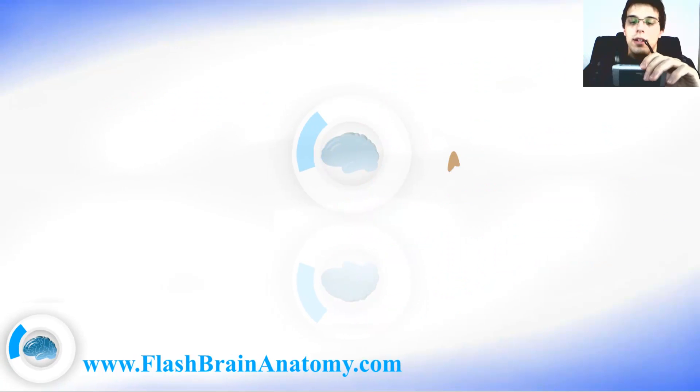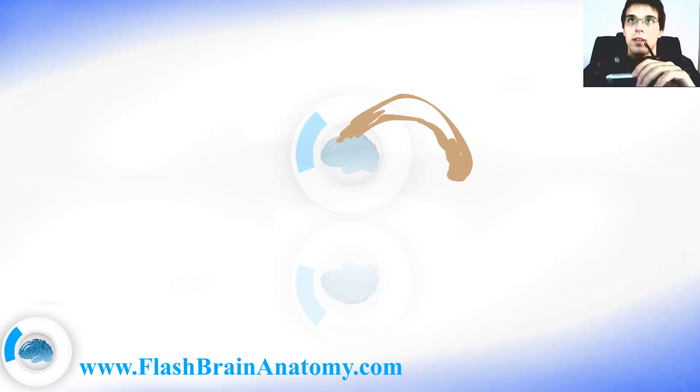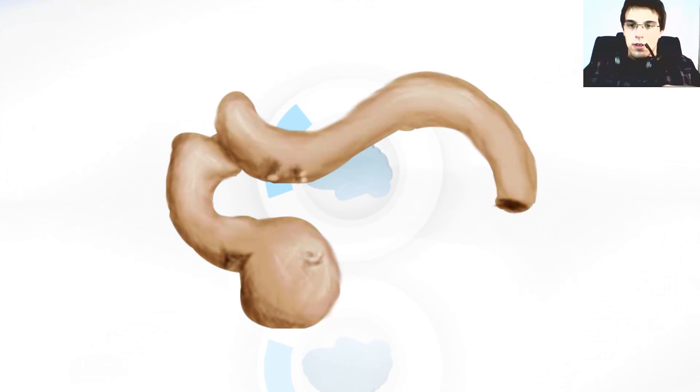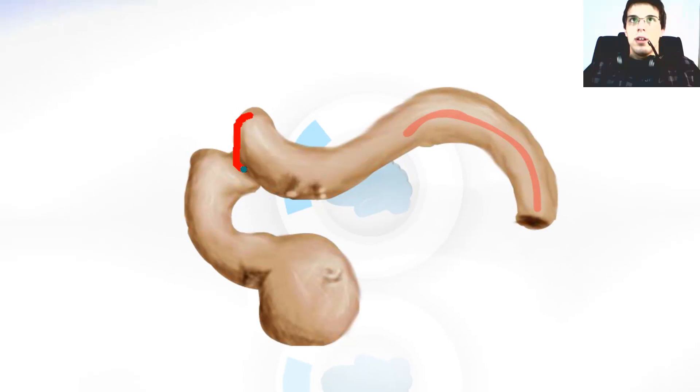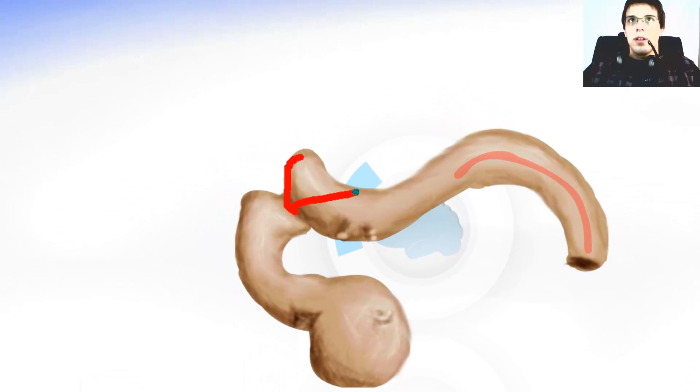Now I will draw the brain of embryo in the second month of pregnancy. It looks something like this. This part over here is the part out of which medulla oblongata is developed, and this over here is the part out of which cerebellum is developed.